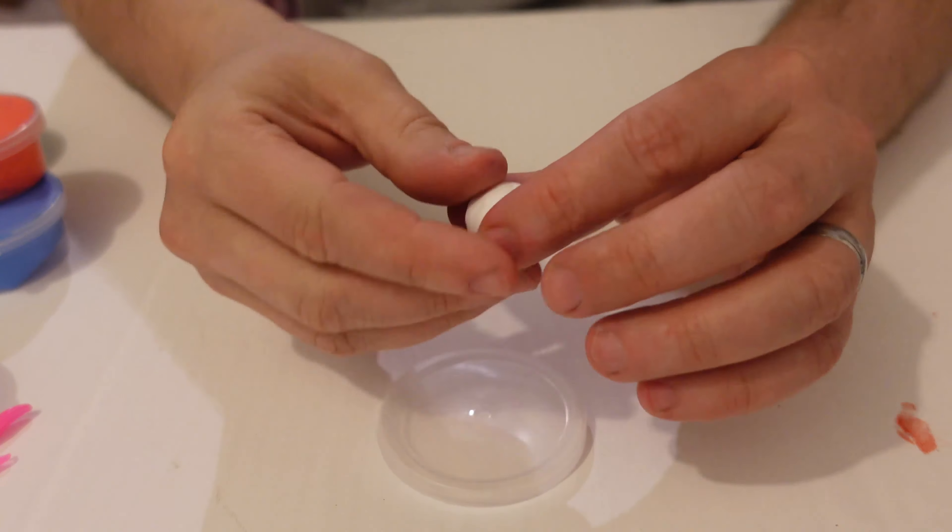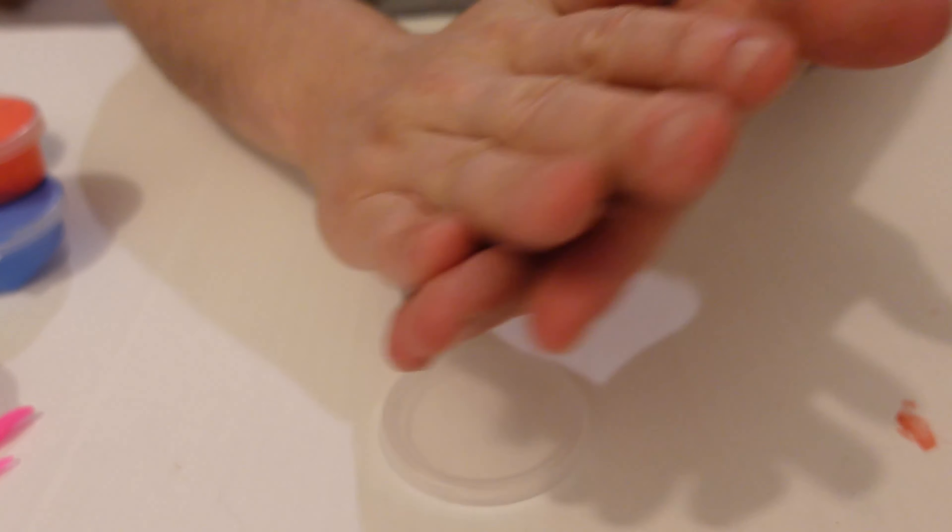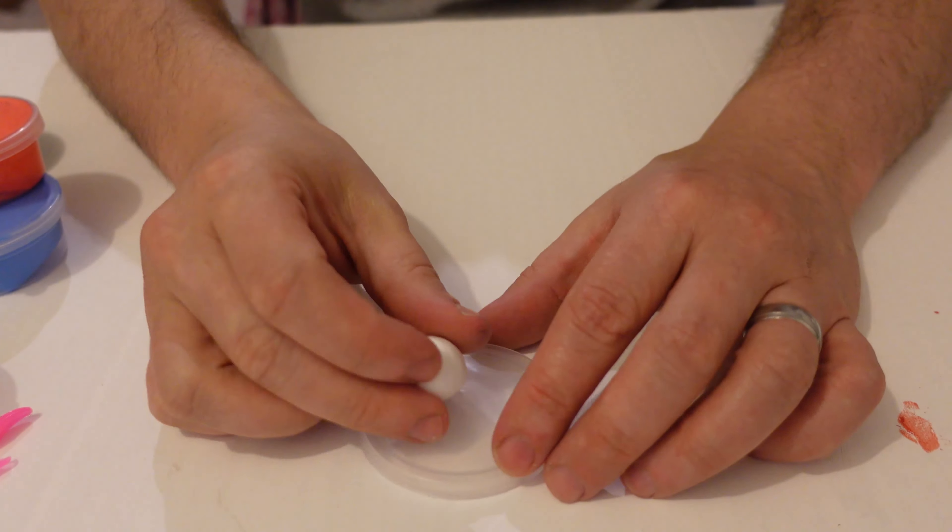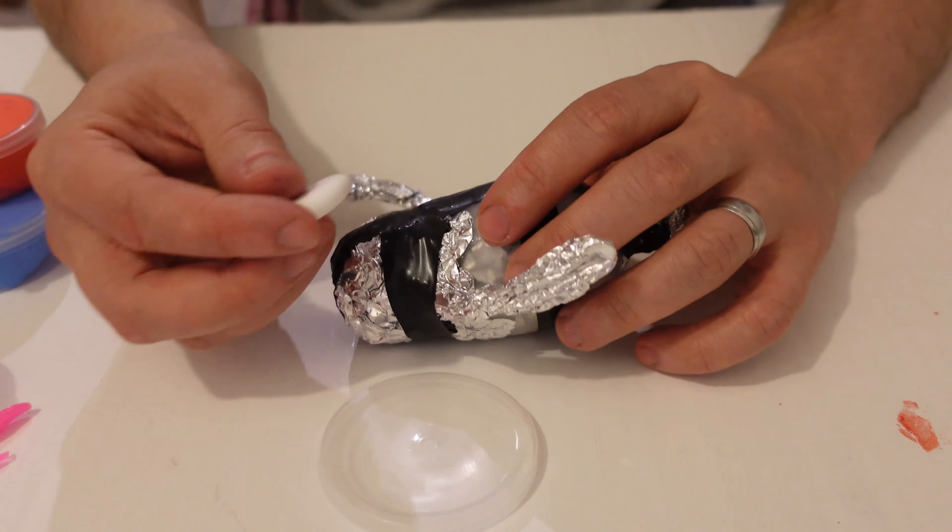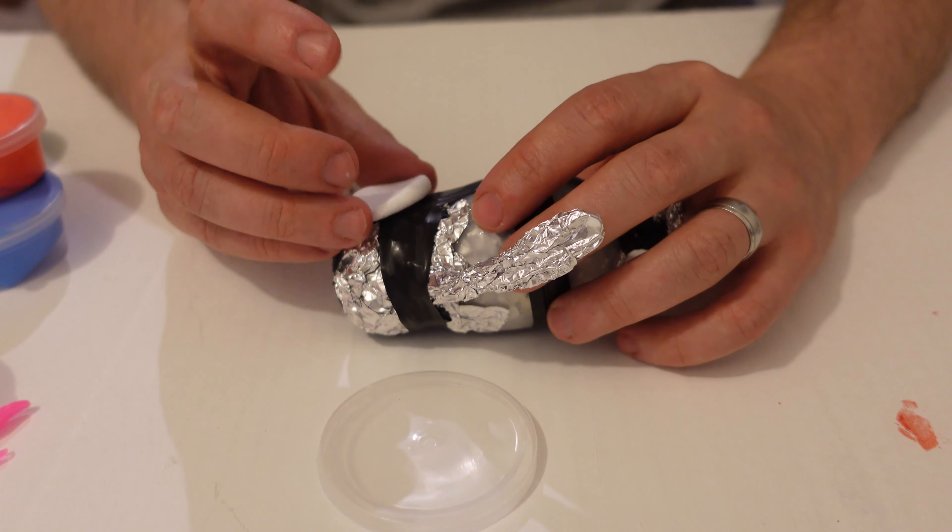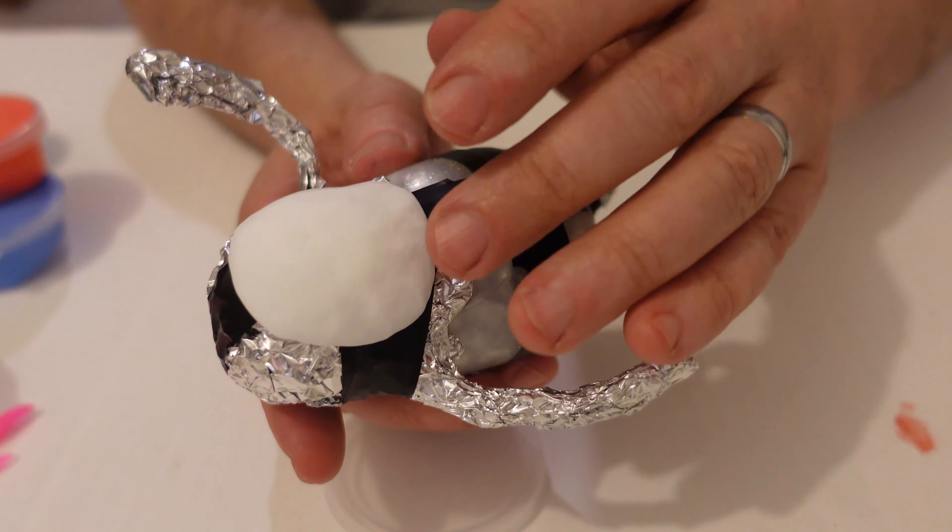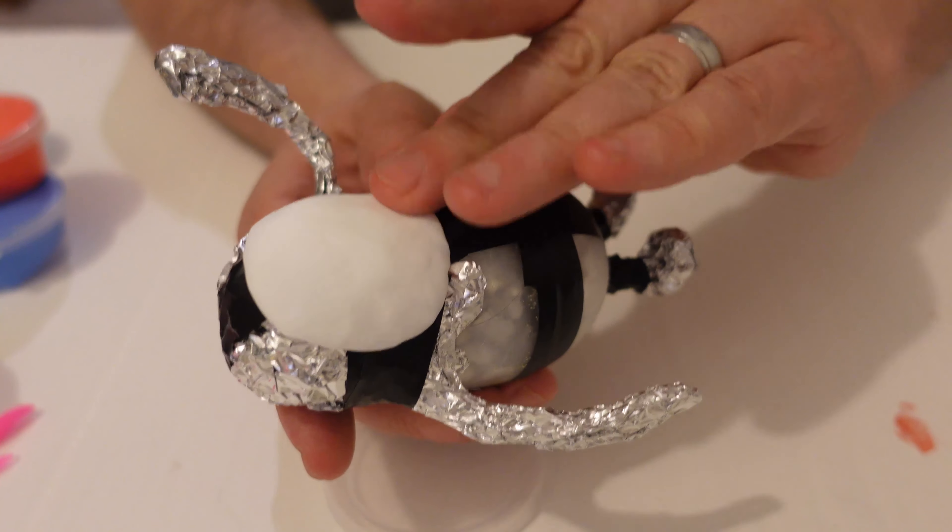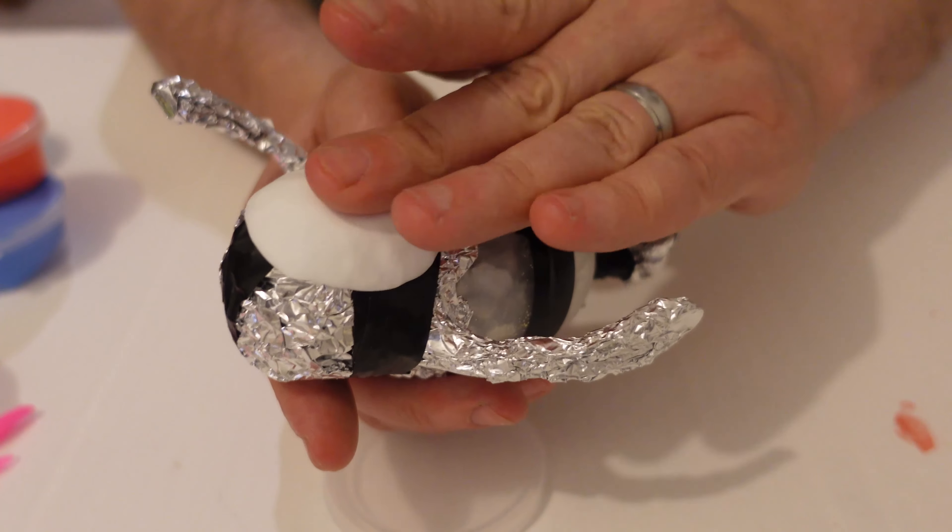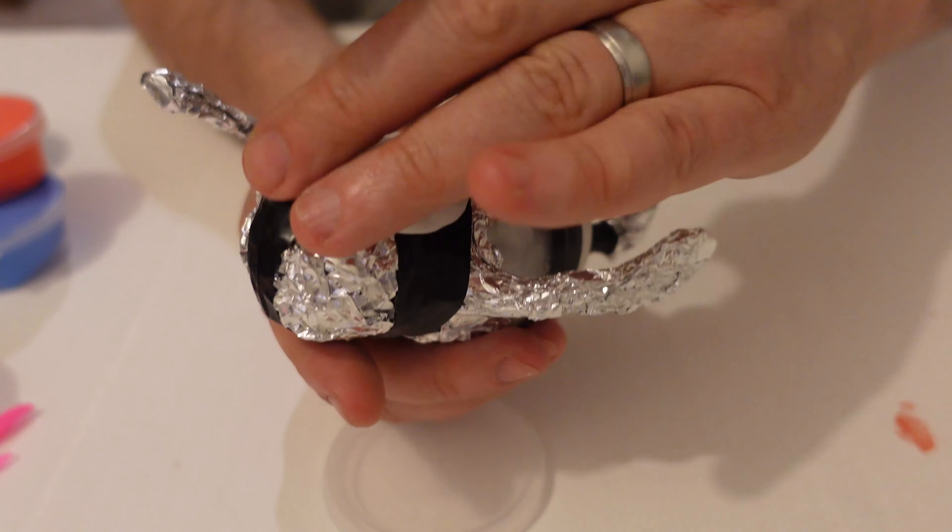Next thing you want to do is grab a little bit of the white clay and form a ball and press that into a disc. That will be your Fall Guy's face. It's better to make this larger than smaller because we're going to cover that with the coloured clay for the outside or the shell of the Fall Guy.